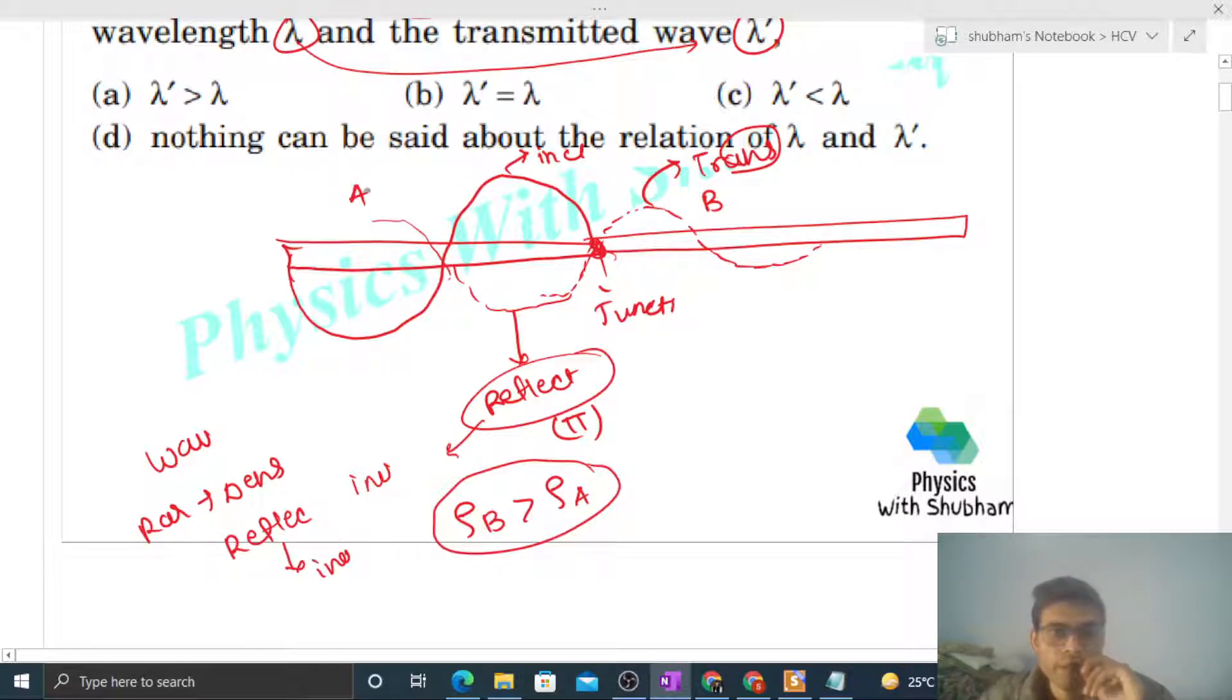So if the density of medium B is higher than the density of medium A, we can say jo speed hoga wave ka medium B mein, that will be lesser than the speed of the wave in medium A. If density high hai, if density of medium increases, then speed decreases, right?